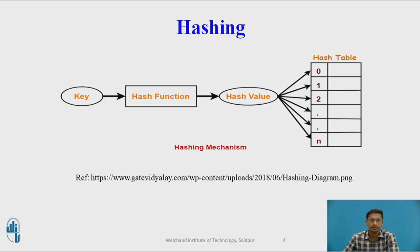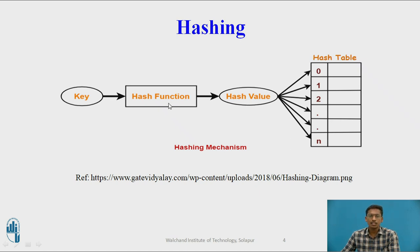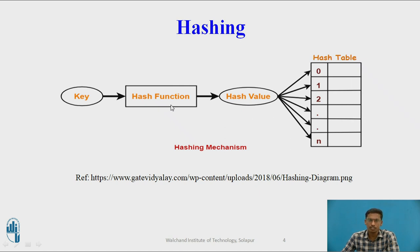Now this is a generalized diagram of hashing. This is a key or input value. We want to insert this input value key inside this hash table. Hash table is nothing but a data structure which stores multiple input values so that searching should be done efficiently. There are two extra terms called hash function and hash value. Hash function takes an input element and generates an output as a hash value of this input element. This hash value is nothing but a location where to store this input element inside the hash table. There may be multiple hash functions present that map this input value to the data structure we call the hash table.